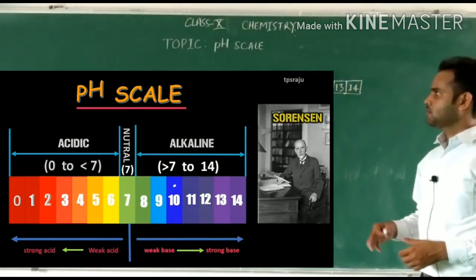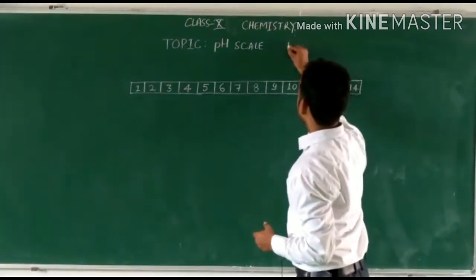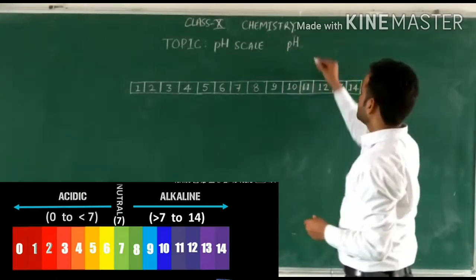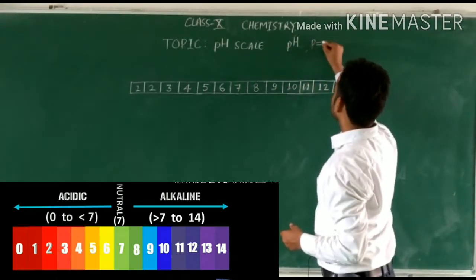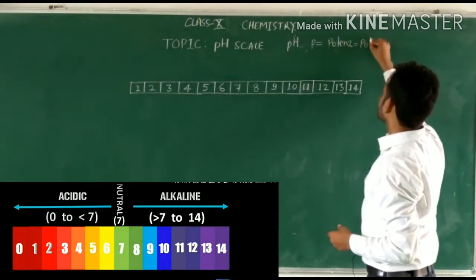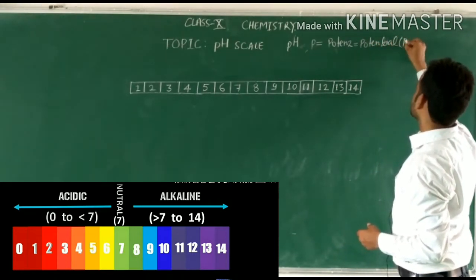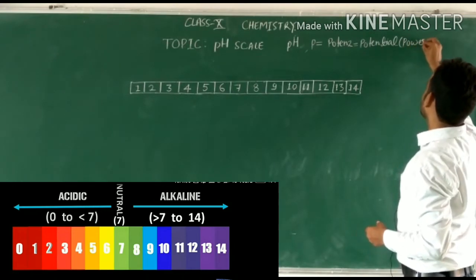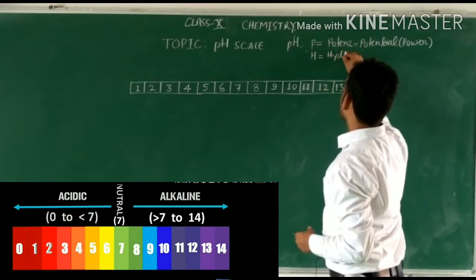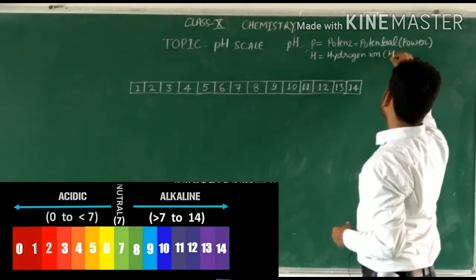Today's topic is pH scale. We write it with a lowercase 'p' and uppercase 'H', where 'p' stands for potence — in German its meaning is potential, which you can say is power or strength — and 'H' stands for hydrogen ion, that is H⁺ ion.